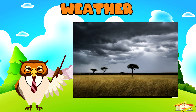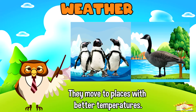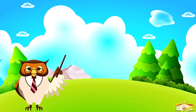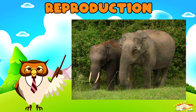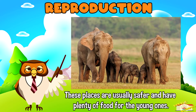Weather: some animals cannot survive in very cold or very hot weather, so they move to places with better temperatures. Reproduction: many animals migrate to specific places to have their babies. These places are usually safer and have plenty of food for the young ones.